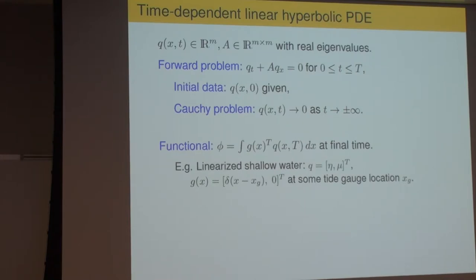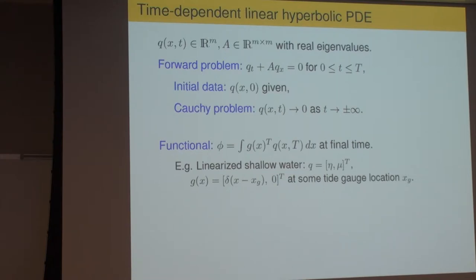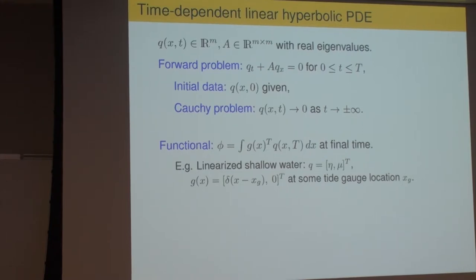Suppose we don't care about u everywhere — suppose we only care about some functional applied to u, similar to the linear algebra problem. Now the functional takes the form of some function G(x) integrated against Q(x,T) at our final time T integrated in space. G(x) corresponds to the g vector in the linear algebra problem. For example, if we thought of this as linearized shallow water equations and we only care about what's reaching one tide gauge somewhere on the coast, G could be a delta function — so G integrated against Q picks out the solution Q at one particular point. The Q vector would have two components: surface elevation and linearized momentum. G might be a delta function in the first component, picking out the surface elevation at a particular point.